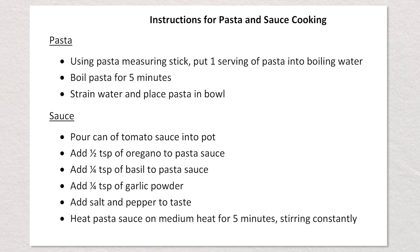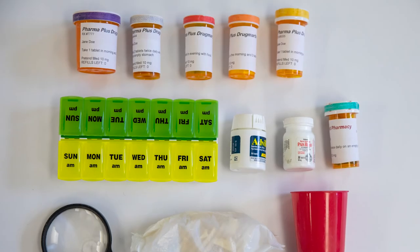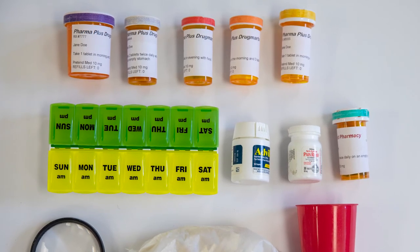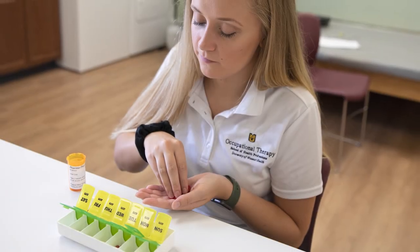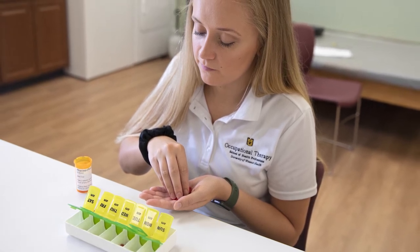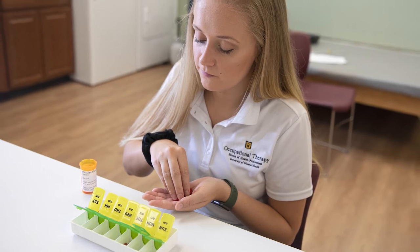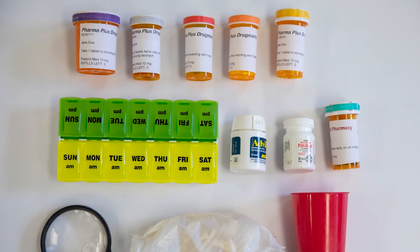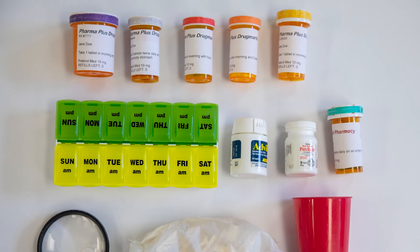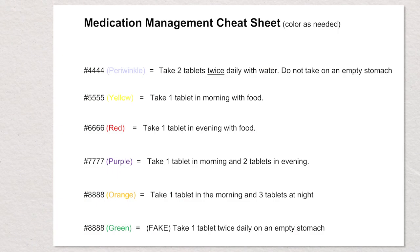When administering the cooking task, it is suggested to use your own copy of the cooking instructions so as to avoid using the client's copy. To prepare for the medication management task, medication labels are placed on each prescription pill bottle with the client's name inserted, with the exception of the distractor label from a different pharmacy. During the medication management task, it can be difficult to determine which medication a client is handling and if they are sorting the pills correctly. To avoid confusion, the medication management cheat sheet is available, which displays each medication bottle number and respective directions. It is also suggested to assign each pill bottle a color displayed visibly on each bottle, including distractor bottles. The color coding can extend to the cheat sheet, allowing the administrator to quickly determine which medication is being handled and what its directions are.